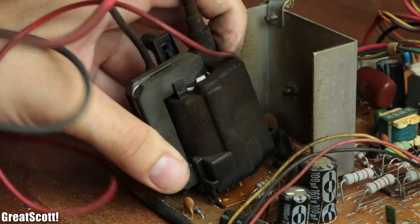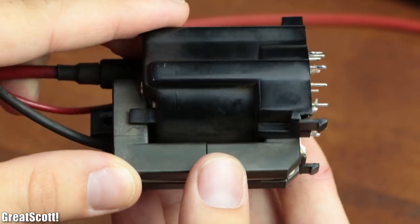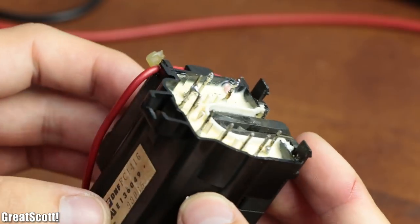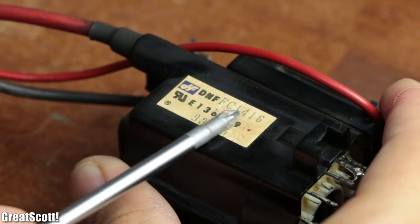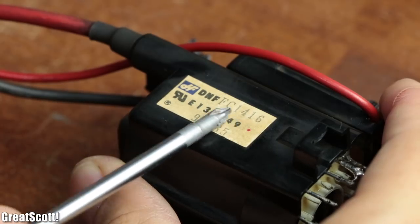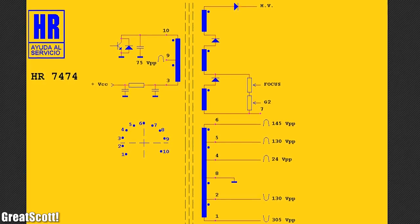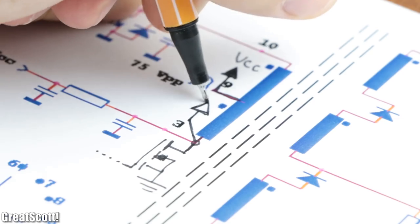After then removing it from the PCB, I had a closer look at it and realized that it got quite a few pins to choose from. Thankfully though by googling its part number I found a schematic of my transformer.